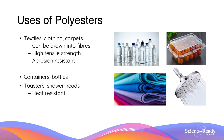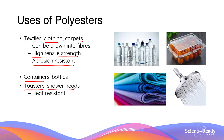Common uses of polyesters include textiles in clothing and carpet, mainly because polyesters can be drawn into fibers and have high tensile strength and abrasion resistance. Polyesters are also found in containers and bottles, especially the fruit containers typically found in supermarkets. Due to their heat-resistant property, polyesters are found in toasters and showerheads — applications often exposed to high temperatures.